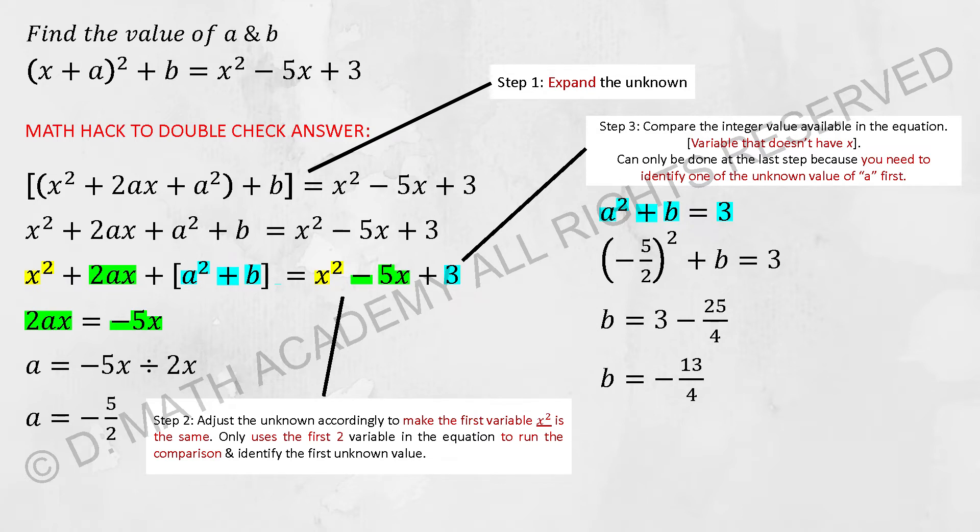Whereby for you to identify b's value, simply square the -5/2 plus b equals to 3. B's result will actually be -13/4.